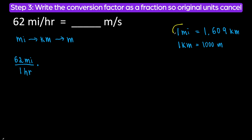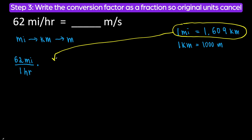We are going to take this conversion factor: one mile is equal to 1.609 kilometers, and plug it in such a way to get rid of miles and be left with kilometers. So prepare to multiply. We have miles on top in the numerator, so we will put miles in the denominator so miles cancel out, and we will put kilometers on top in the numerator. Now let's plug in the numbers: one mile goes in the denominator, and 1.609 will go in the numerator.